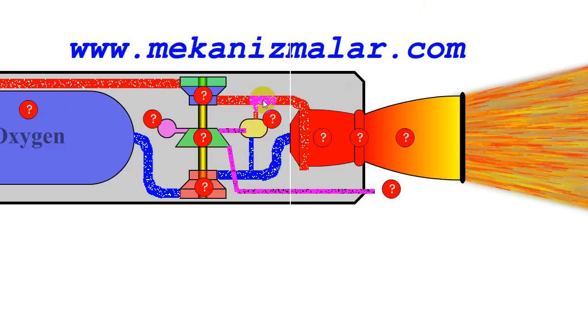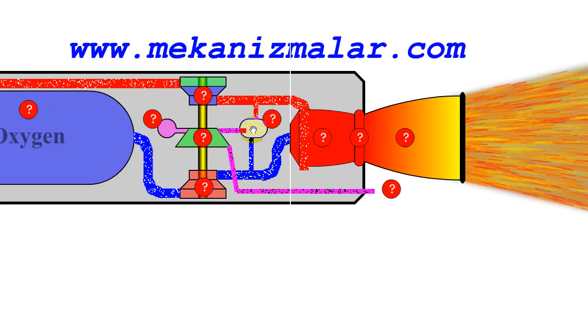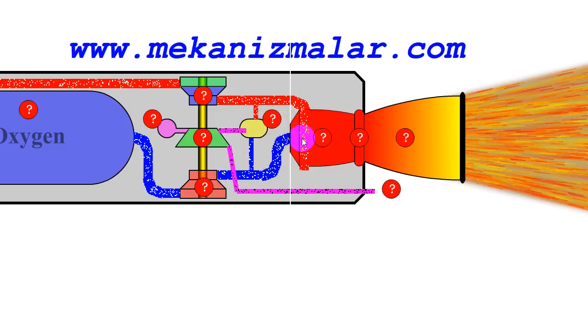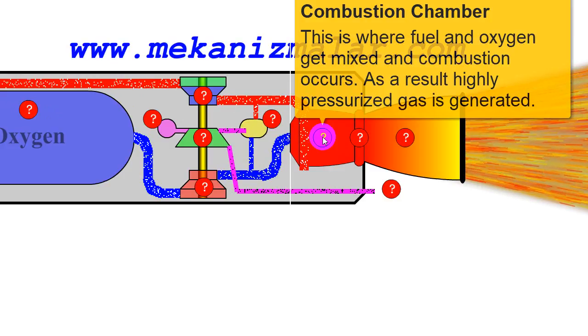Therefore, the operation of the turbine forces the fuel and oxygen to the combustion chamber by using pumps. Once the fuel and oxygen is mixed in the combustion chamber, it is ignited and the operation of the engine starts.